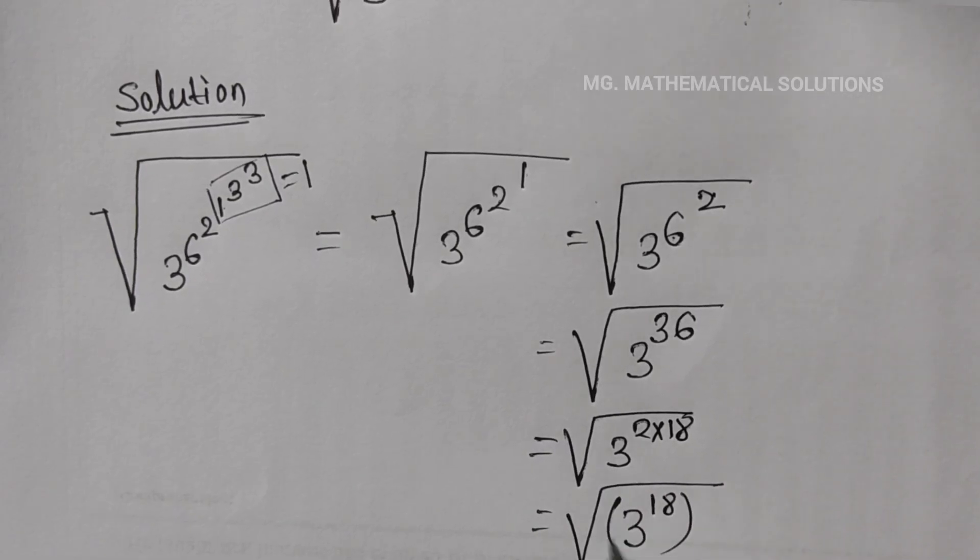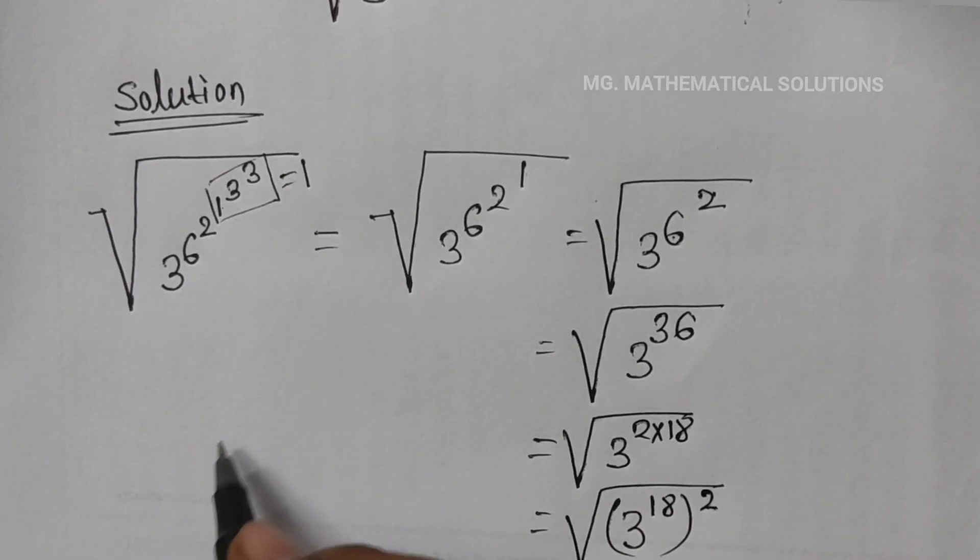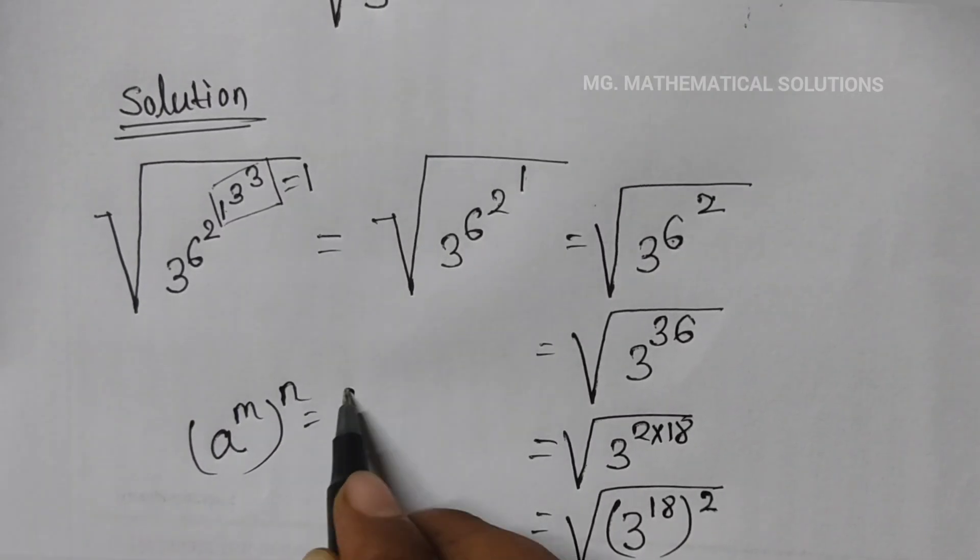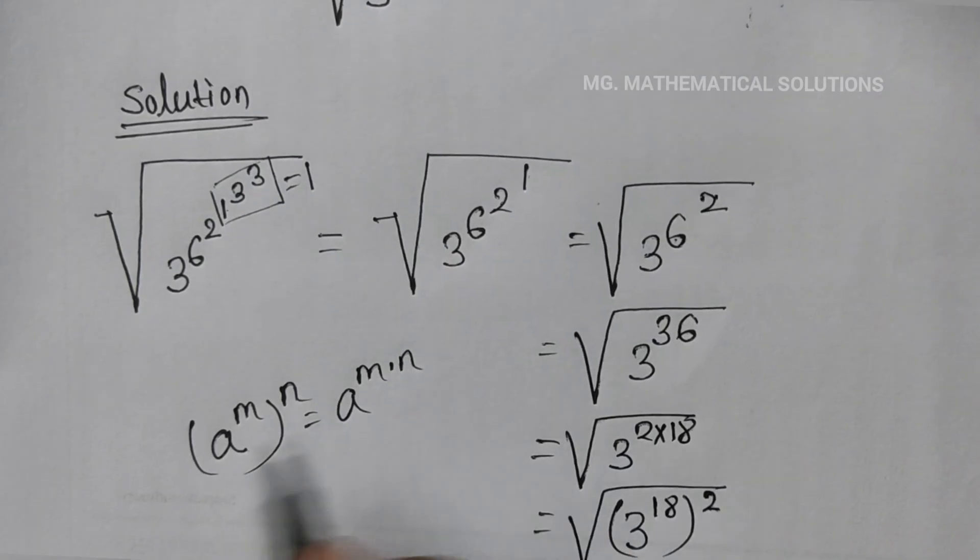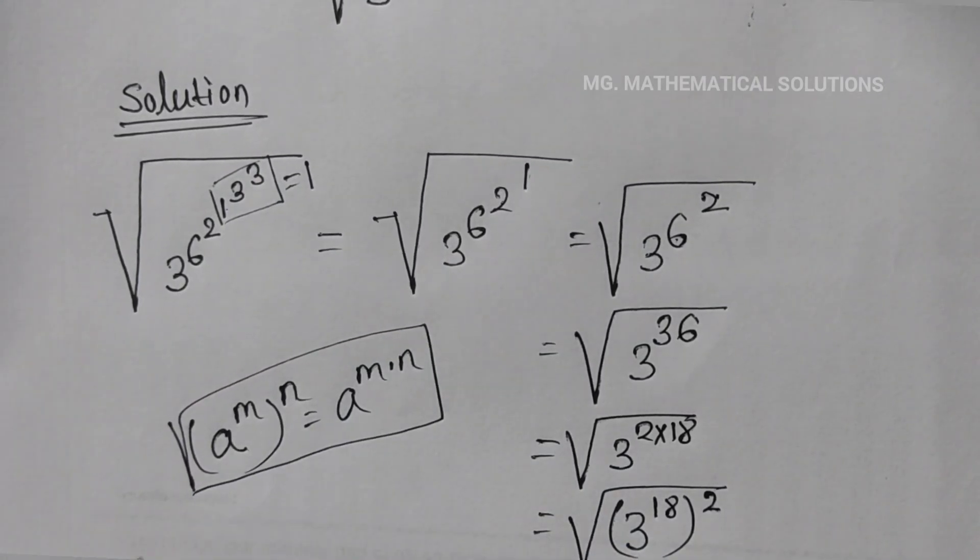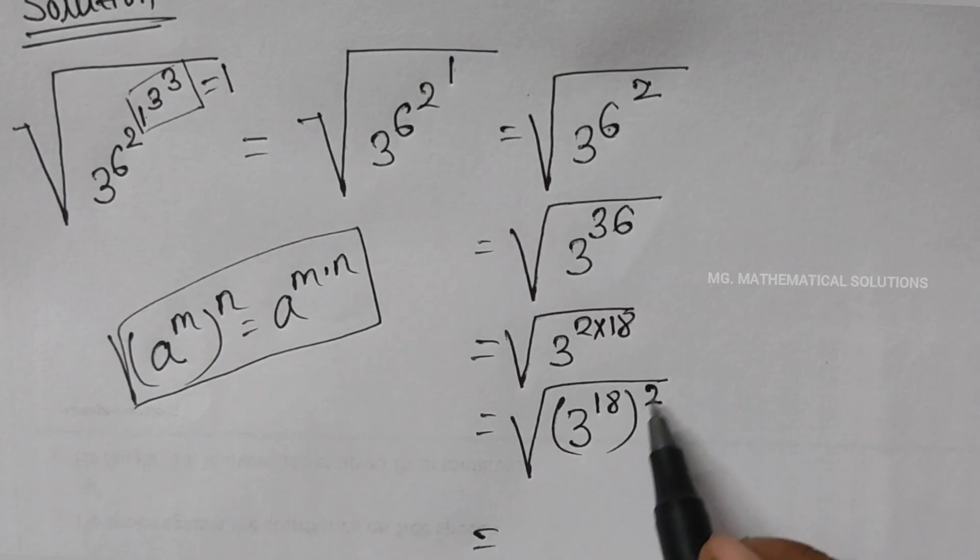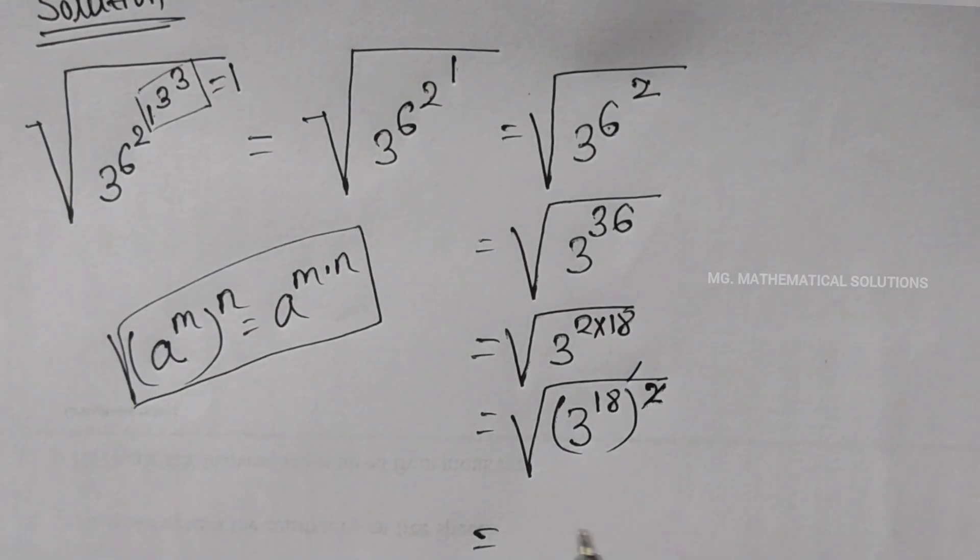We use the formula: a to the power m, whole to the power n, equals a to the power m into n. Here square and root cancel, so 3 to the power 18. This is the answer.